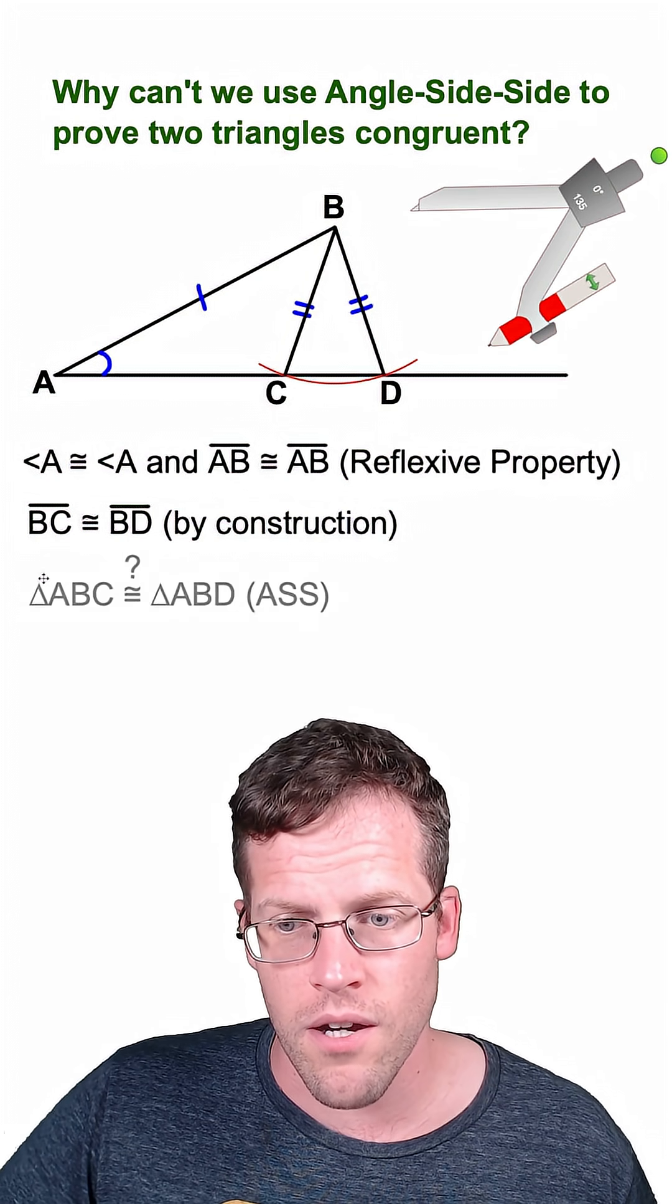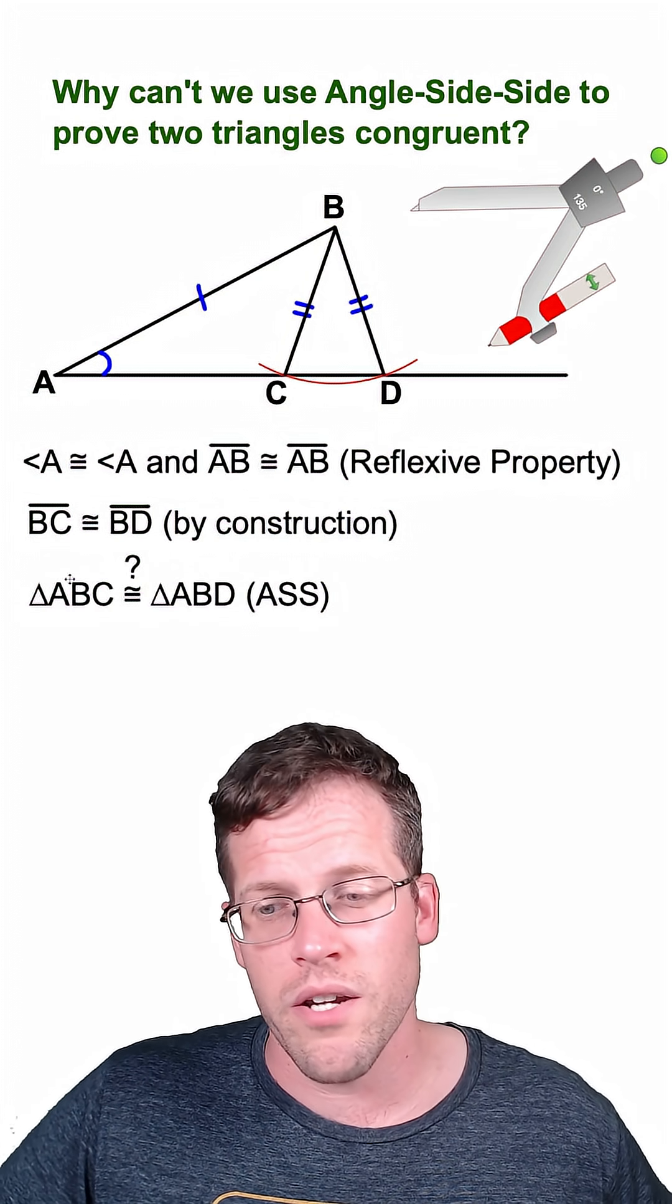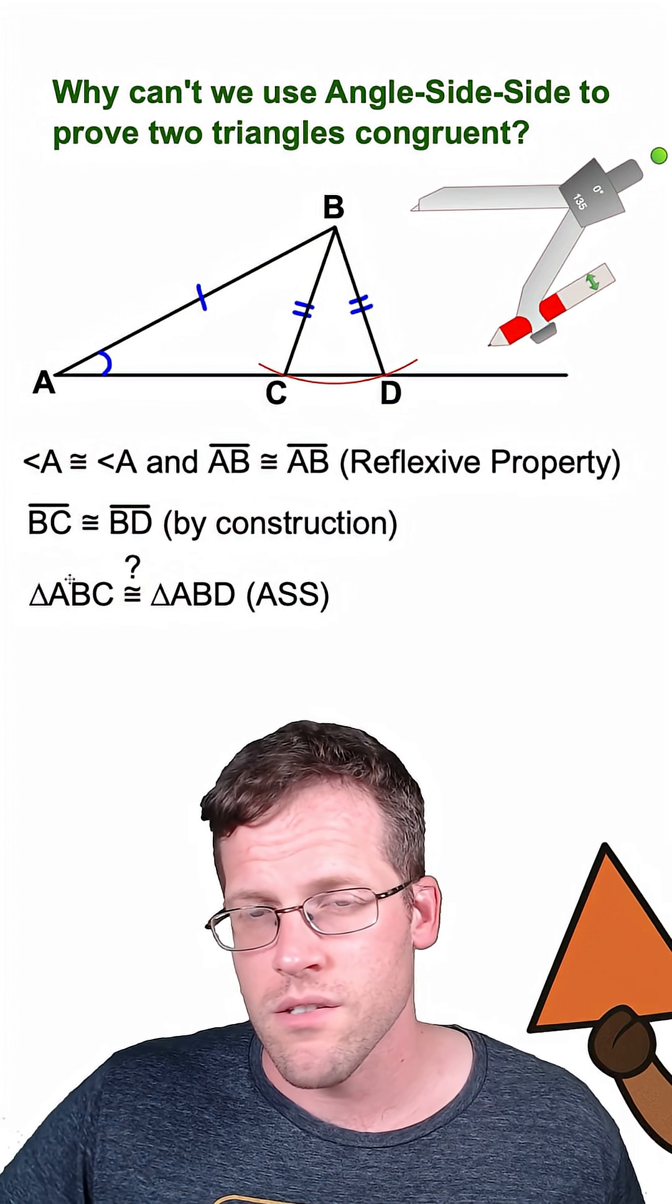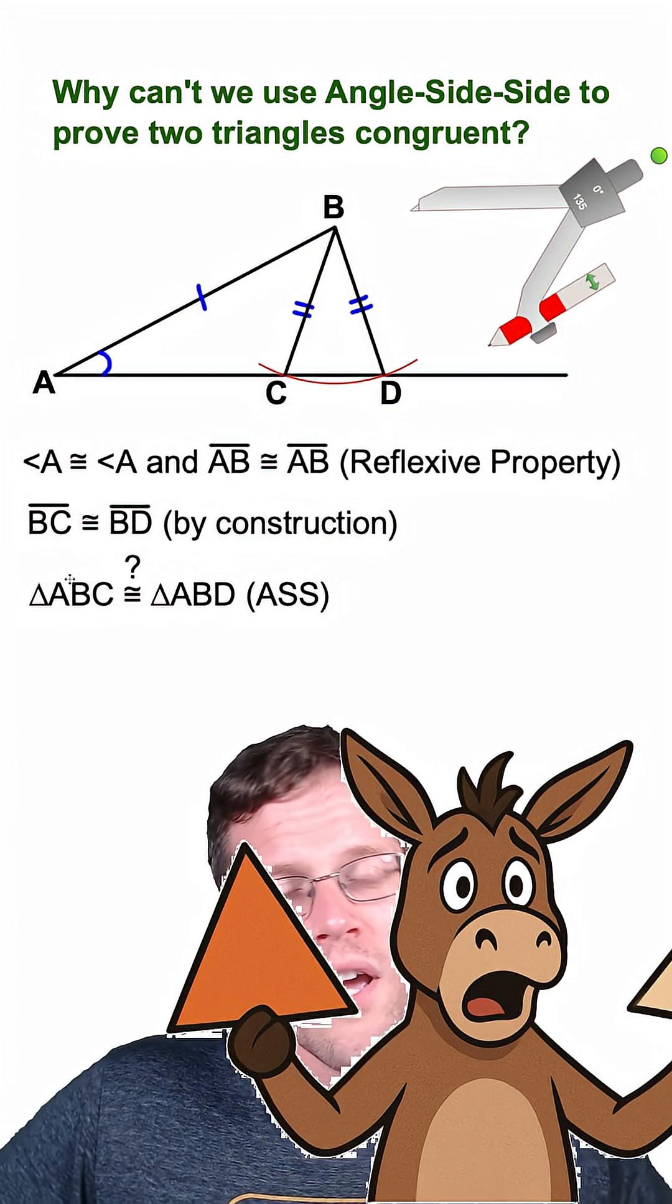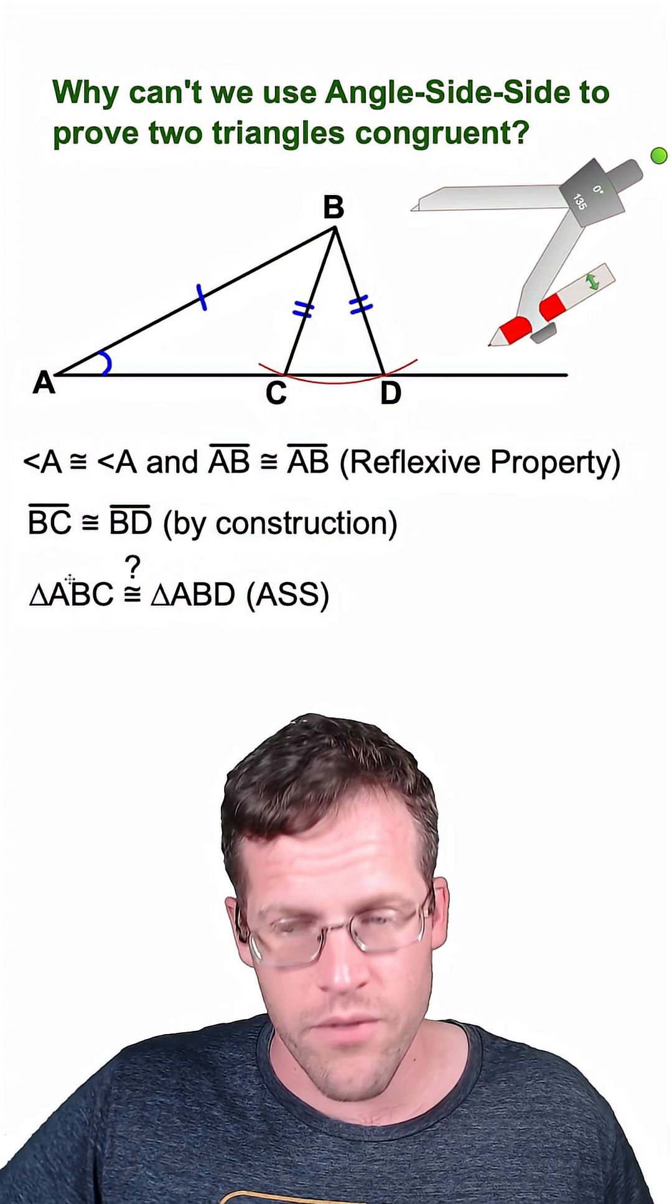We have next up, triangle ABC is congruent to triangle ABD by ASS. No, ASS is such a bad word, I can't even say it.